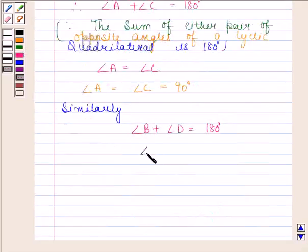But angle B is equal to angle D because opposite angles in a parallelogram are equal. So this implies both angle B and angle D are equal to 90 degrees.